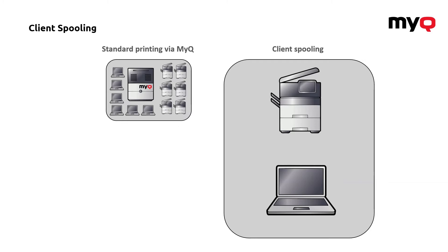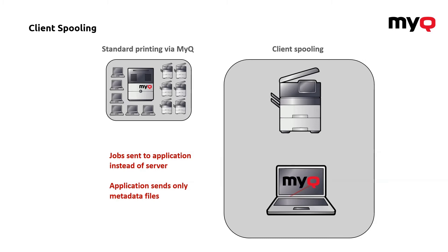Another problem might be a low bandwidth connection between the central server and the distant site. The solution is client spooling. You install the application on your computer and make sure all jobs are sent to the application first. The application automatically gets the job and produces a special metadata file. The actual print job is stored on the hard drive of the user's computer. Instead of the actual print job, the print server receives only the metadata file, which contains information about the user, the print job, and where the job is located.